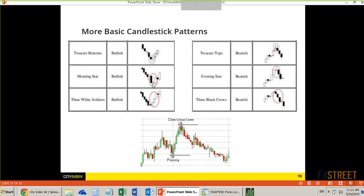We see a morning star and evening star. Basically the story: indecision after a run up on the evening star, indecision after a run down on the morning star — a potential turn. We're not saying it's definitely going to turn. But if this is at support and we have a breakout to the upside after the pattern, then for me that is a higher probability trade. We have the confluence of the support and the morning star candle pattern, and then a breakout to trigger us to get into the trade. A high probability trade does not equate to a sure thing.